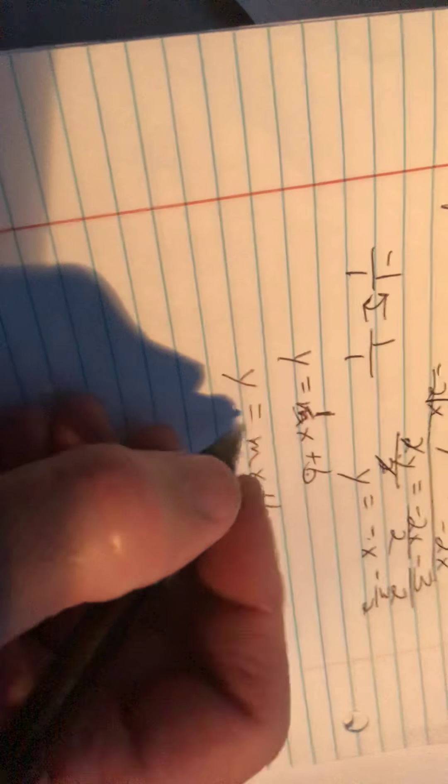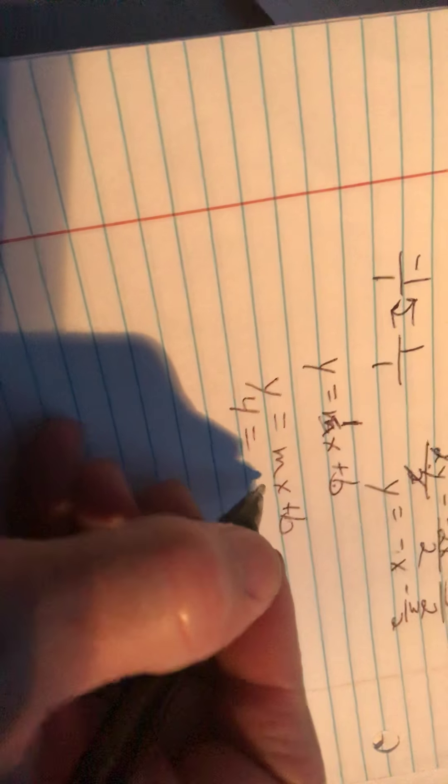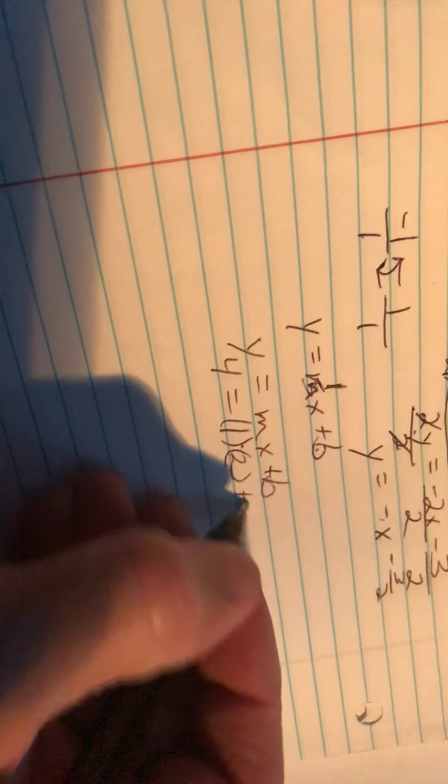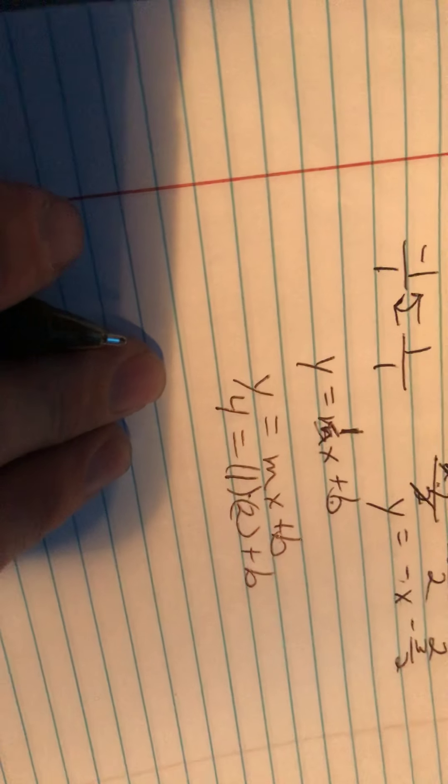And so 1 times 2 is 2 plus b. We subtract 2. That is going to leave us with 2 for b.